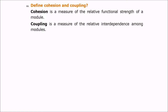Define cohesion and coupling. Cohesion is a measure of the relative functional strength of a module. Coupling is a measure of the relative interdependence among modules. How well the elements inside a module perform the same assigned job is its cohesion — we want cohesion to be high. The interdependence between modules is coupling — we want coupling to be as low as possible.